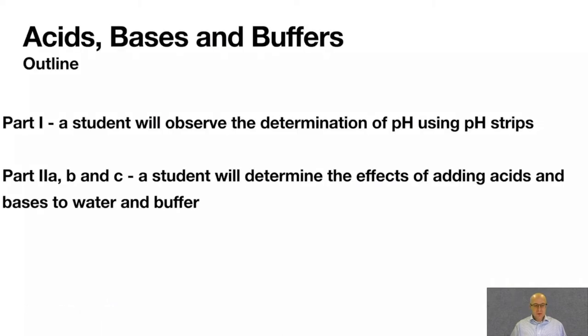So now, part one, a student will observe the determination of pH using pH strips. pH strips are just pieces of paper that will turn specific colors depending on the concentration of hydronium. Bright red is acidic, dark blue is extremely basic, and all kind of colors in between can give you an idea of the concentration of hydronium.